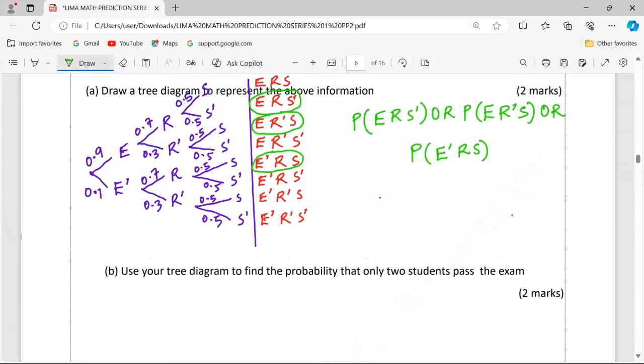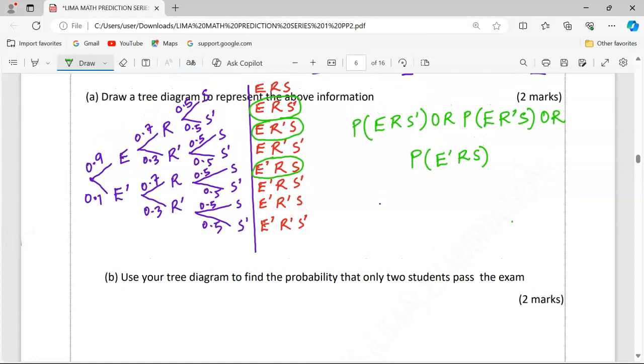To compute this, we need to start with 0.9, 0.7, 0.5. Or, in probability means addition, 0.9, 0.3, 0.5, or 0.1, 0.7, and 0.5.